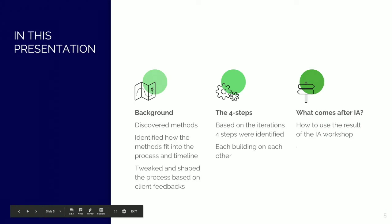There are basically two questions our clients usually have when they come to us: what information is essential for a developer portal, and how this information should be structured. Our four-step information architecture method is developed to be able to answer these questions. Our goal is basically to create a roadmap that can take the team to and beyond their MVP developer portal.